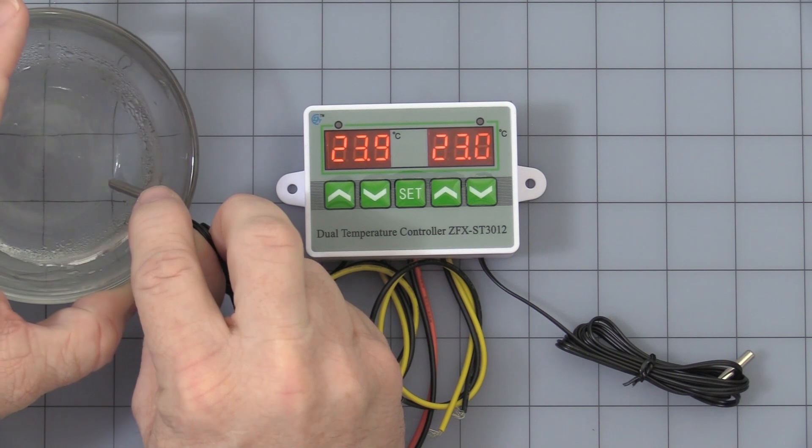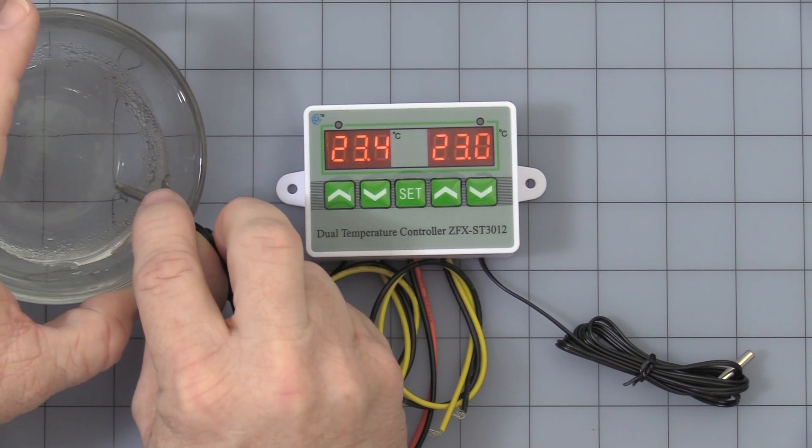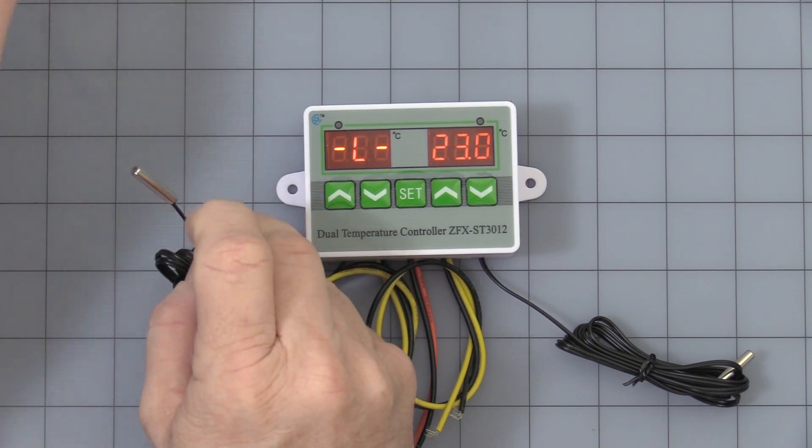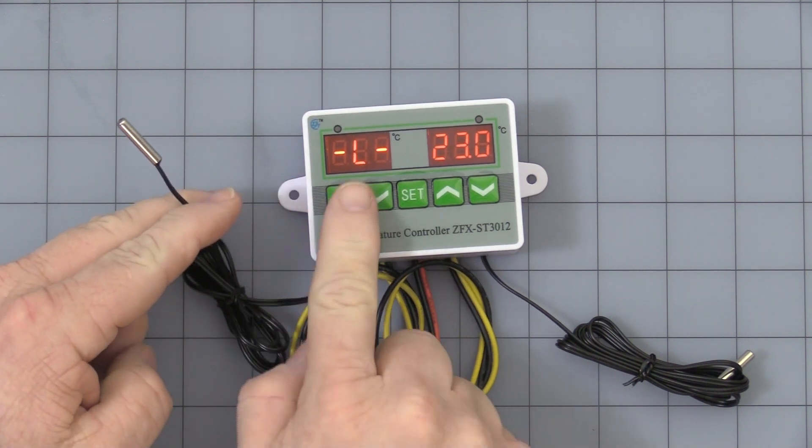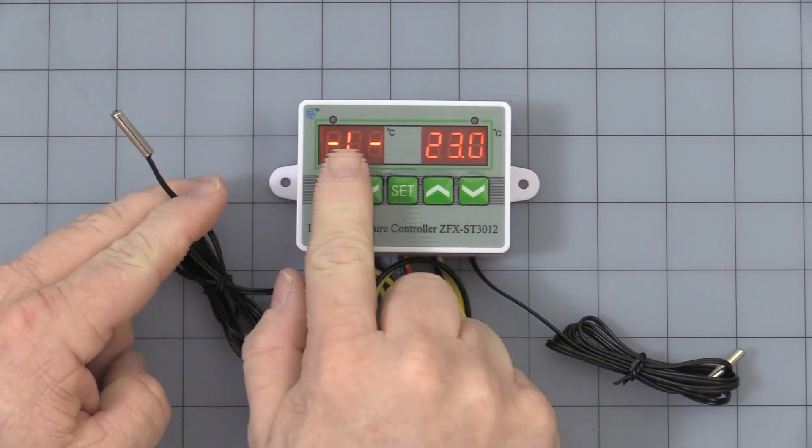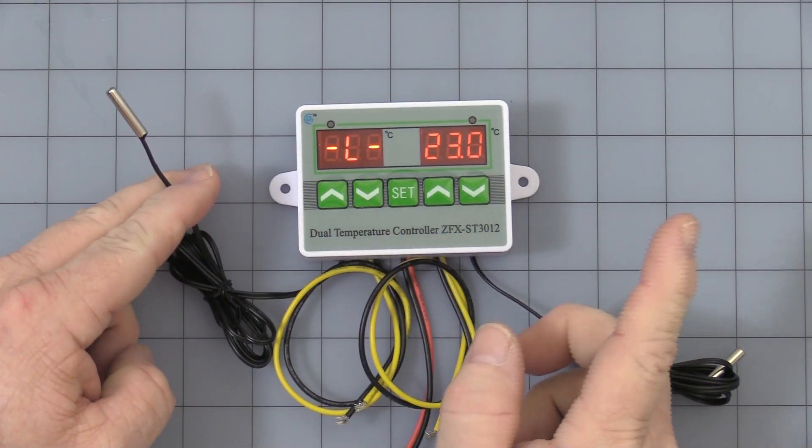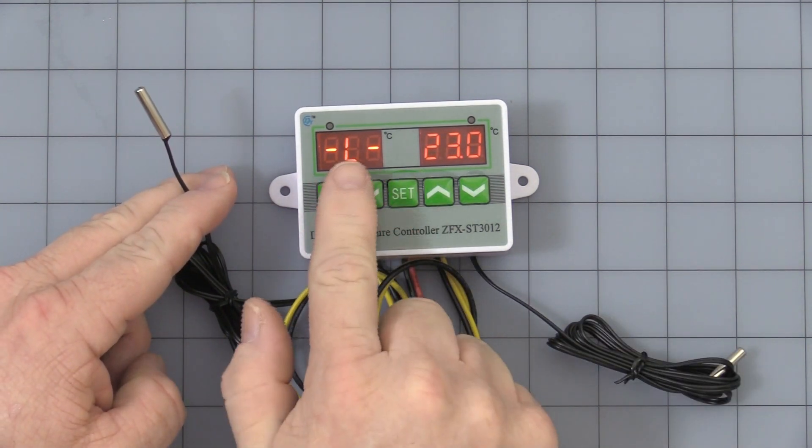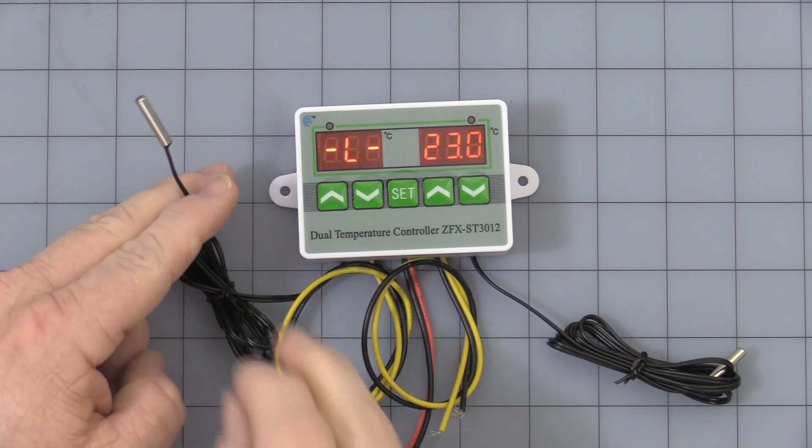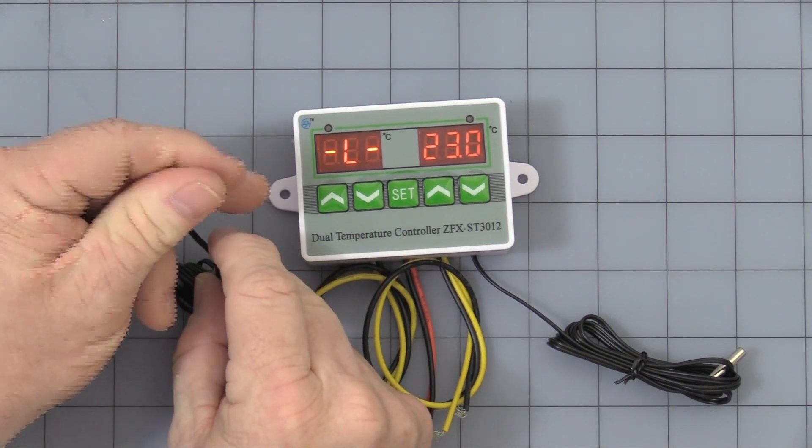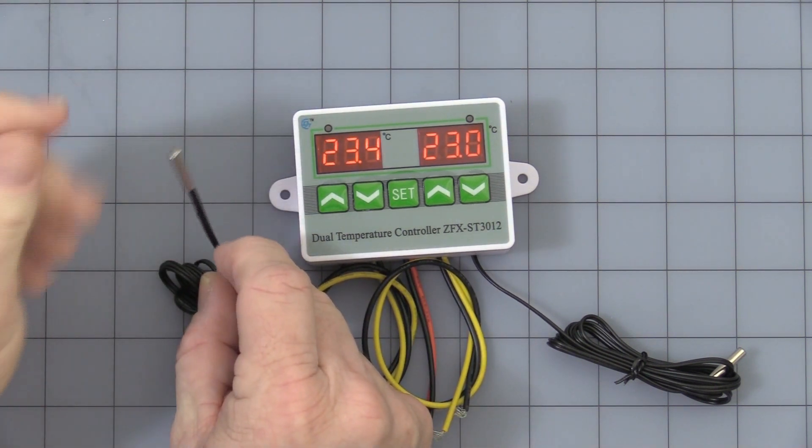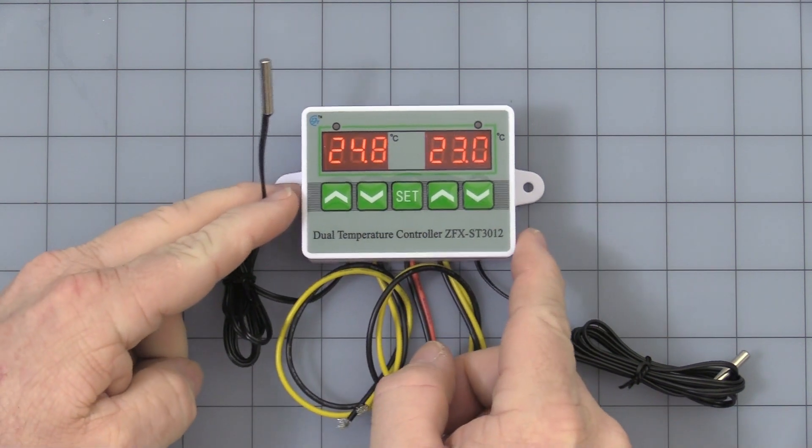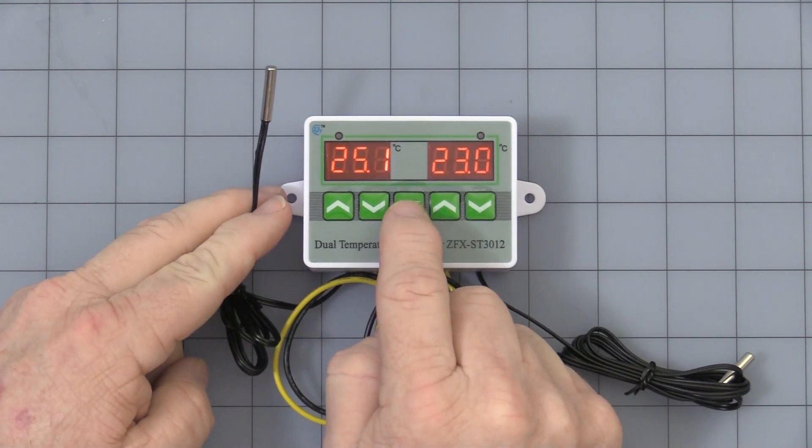Now to show you what the low temperature alarm does, let's get it down to that set point. It will start flashing, start beeping and you see it just said L. You should be able to hit the set button and stop the alarm, but it will always just show the L until the temperature rises above that low level alarm point. There you go. Then it starts displaying ambient temperature.